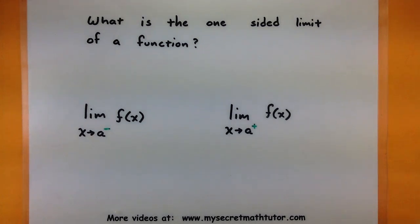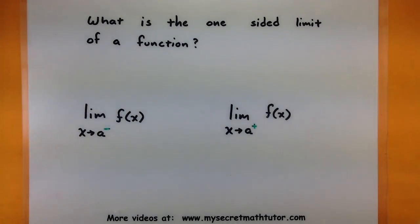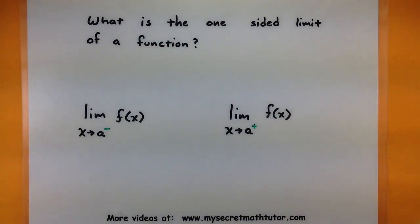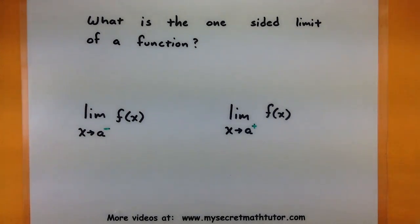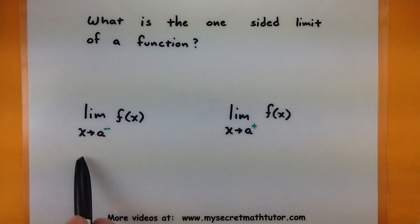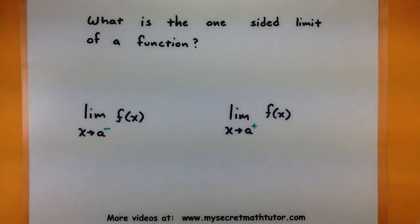Hello and welcome to My Secret Math Tutor. In this video I want to show you what a one-sided limit is as opposed to a normal limit. Usually when you study limits in general, you're looking at the value that a function is approaching as x is approaching some sort of value. When you run across these one-sided limits, they're almost the same thing. The only difference is that we'll be approaching that x value either from the left side or the right side, and we have two different bits of notation to express that we're only going to be approaching that value from one side.